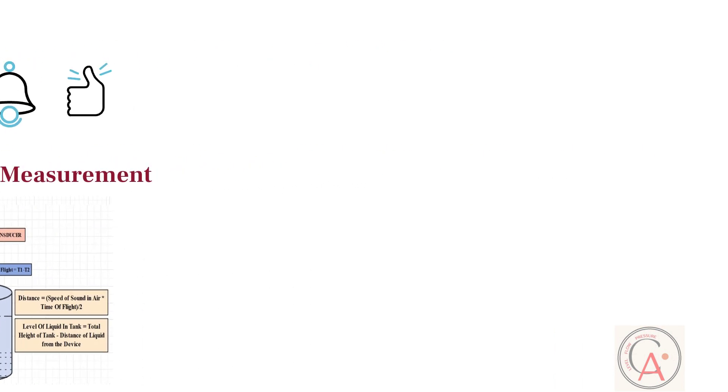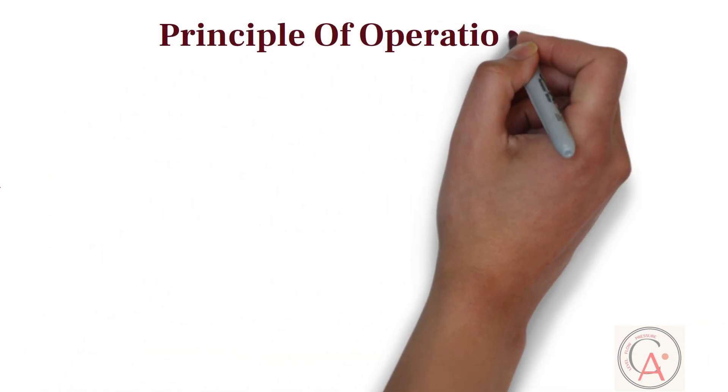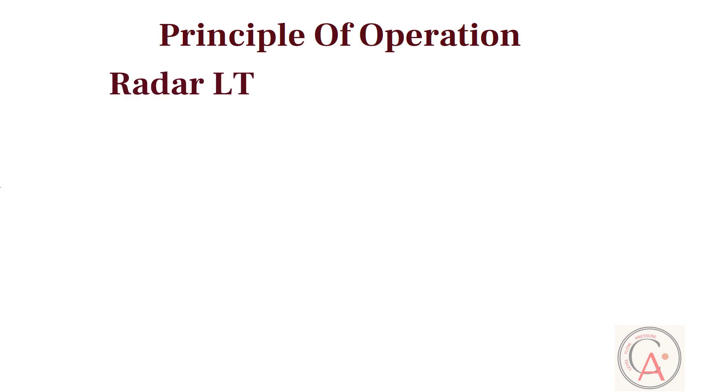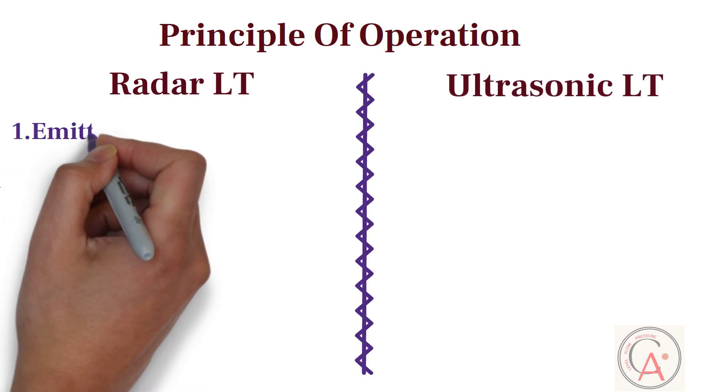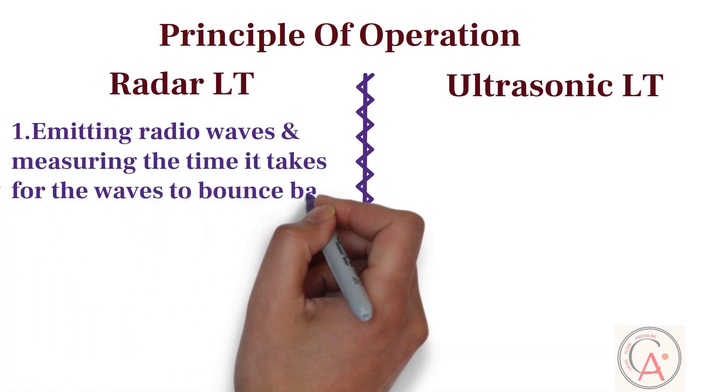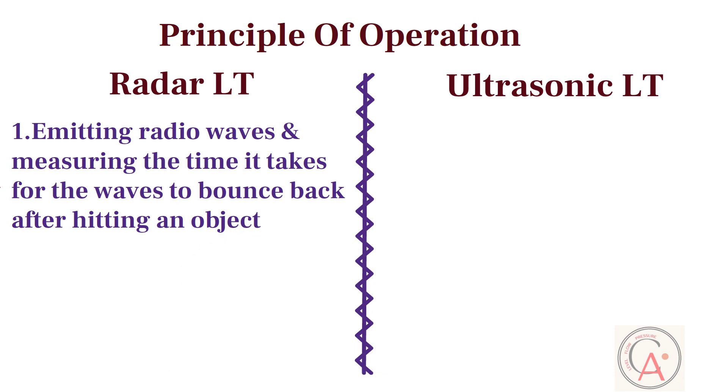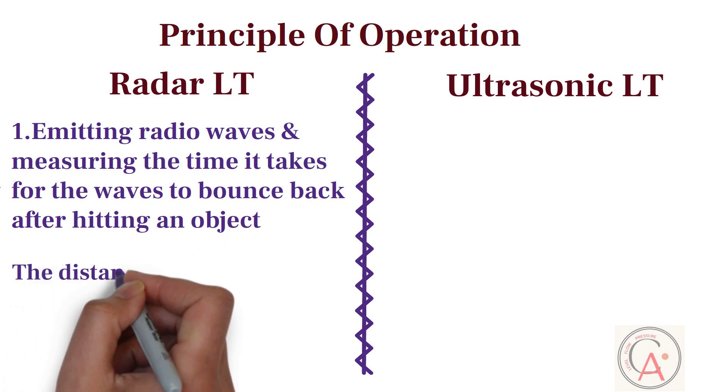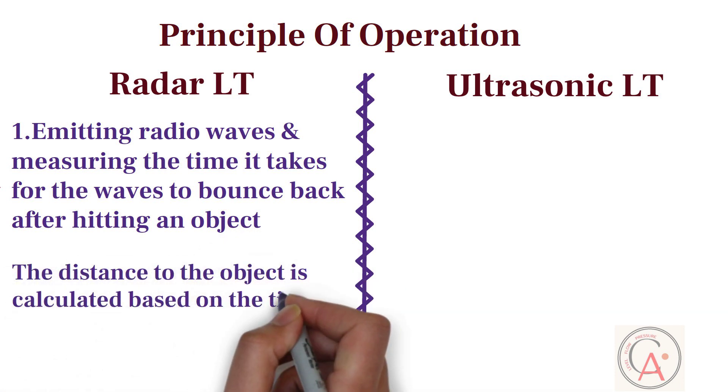First, let's compare both technologies based on principle of operation. Radar operates by emitting radio waves and measuring the time it takes for the waves to bounce back after hitting an object. The distance to the object is calculated based on the time delay and the speed of radio waves.